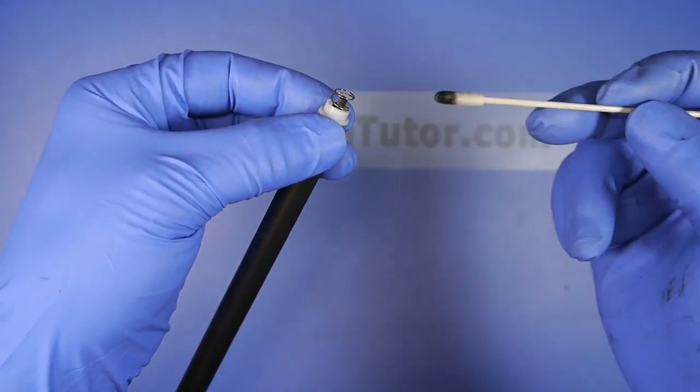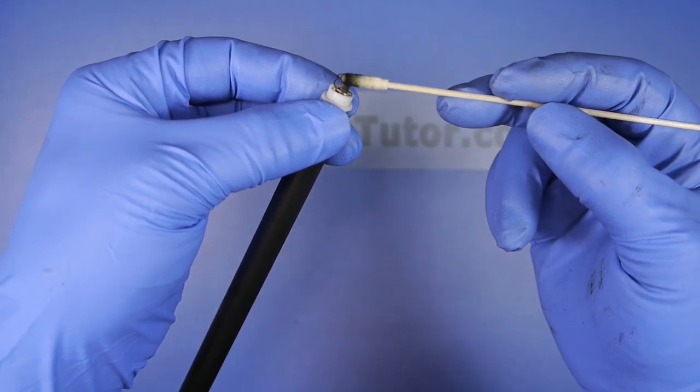Then you'd want to take conductive grease before you installed it back on the cartridge and coat the spring.